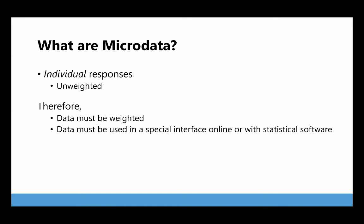So what are microdata? They're individual responses. When you go to data.census.gov, what you're accessing there are tables that the Census Bureau has pre-made for the public from the microdata. So all of those tables are based on the individual responses. But if you're looking at the individual responses directly, then you have a lot more flexibility in terms of being able to look at greater detail.